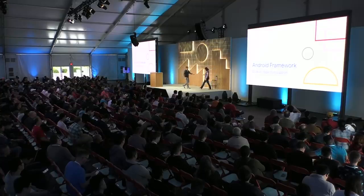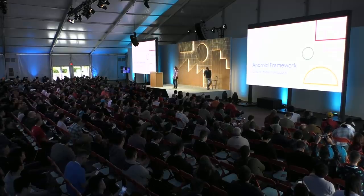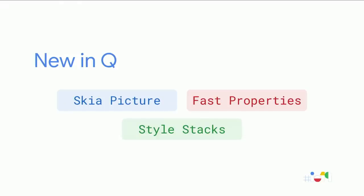For Android Q, three new APIs were added to enable these inspection features: the ability to serialize all drawing commands that went into building a frame and send them to Studio to replay and build the 3D view; significantly faster retrieval of view hierarchy properties with additional metadata; and new APIs in the resource framework to see where an attribute value came from, plus insight into the theme resolution process for that attribute value.